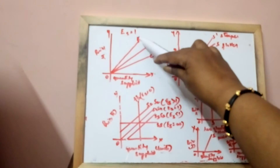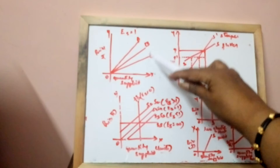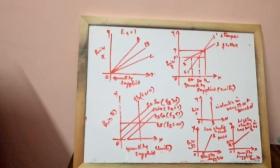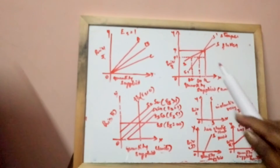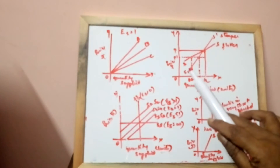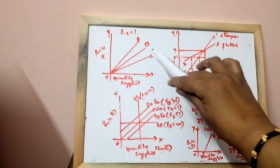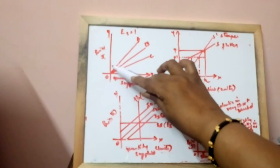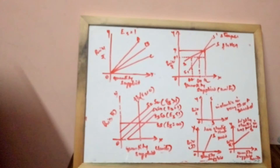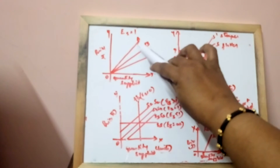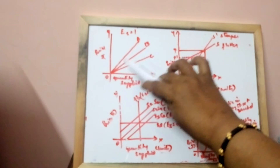The first one: elasticity of supply is equal to 1, that is unitary elastic supply curves. So all these curves are unitary elastic supply curves. The supply curves which are straight lines and pass through the origin have unitary elastic supply, irrespective of the angles they make with the origin.